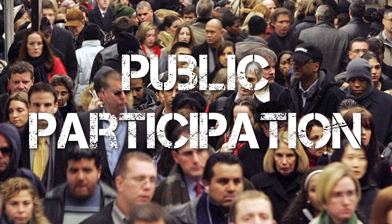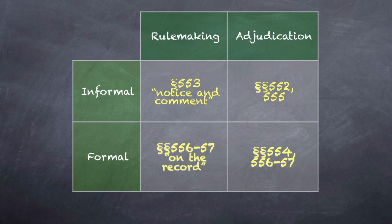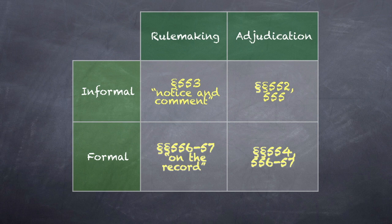Let's look again at our big picture. In the rulemaking column, take note of the fact that there are two models of procedural requirement. The less formal of the two is notice and comment rulemaking governed by APA Section 553. The more formal is often referred to as on-the-record rulemaking, which follows Sections 556-557 trial-type procedures much like those that govern a civil trial and also govern formal APA adjudications.